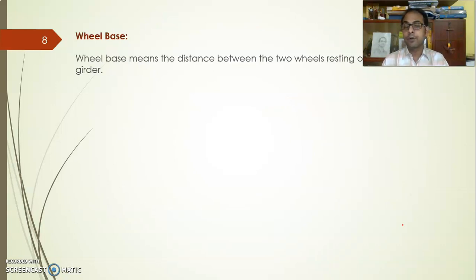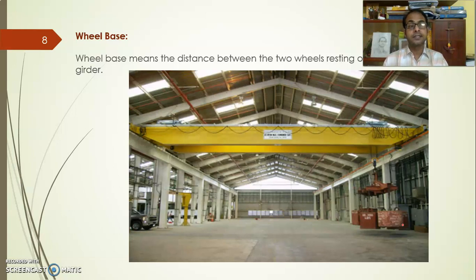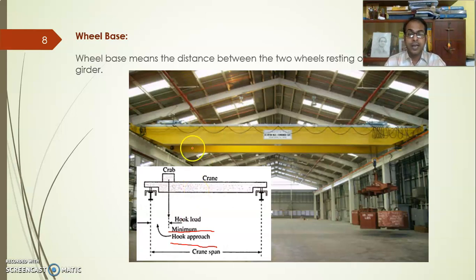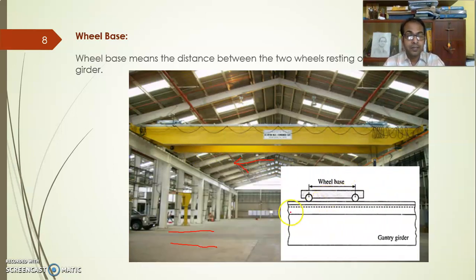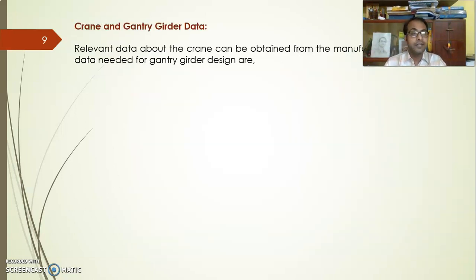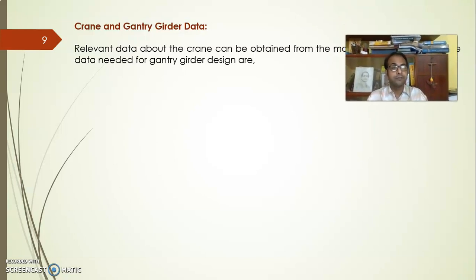Wheelbase distance is also a very important terminology. You can see in the picture the crane girder should not go beyond the minimum hook approach distance, which is specific to a particular type of crane. Taking a cross-section view, the crane girder is provided with two axles, and the distance between the two axles is known as the wheelbase distance, which is specific to the crane type and is to be provided by the vendor.